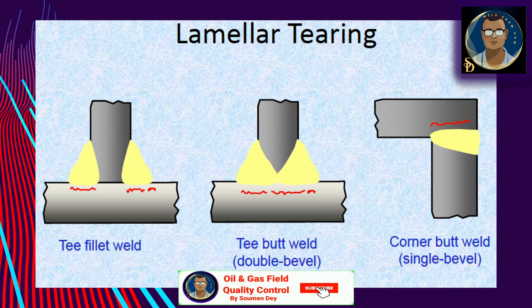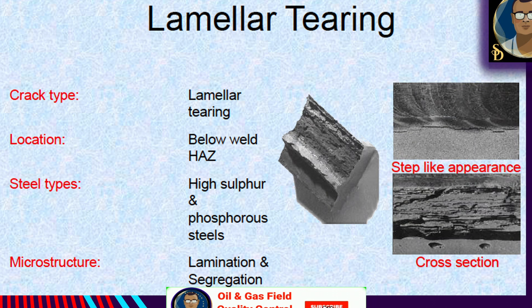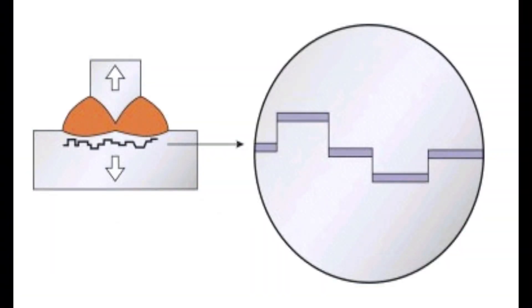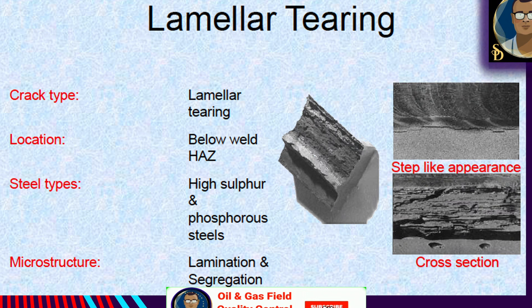These two stages create the terraced appearance of lamellar tearing cracks. The main options to control the problem in joints liable to lamellar tearing are: use a clean steel with guaranteed through-thickness properties (Z-grade); use a combination of joint design, restraint control, and welding sequence to minimize cracking risk. Methods of avoidance include: avoiding restraint, using controlled low-sulfur plate, grinding out the surface and buttering, changing the joint design, and using a forged T-piece for critical applications.